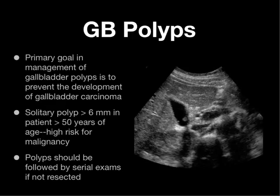Briefly, let me talk about gallbladder polyps. The primary goal in the management of gallbladder polyps is to prevent the development of gallbladder carcinoma. Someone with a solitary polyp greater than 6 millimeters and age greater than 50 years old is high risk for malignancy. If polyps are not going to be removed via cholecystectomy, they need to be followed by serial exam. Polyps are going to be echogenic areas within the lumen — they're not going to be mobile and they should not cast shadowing — but if you see these as incidental findings, refer the patient for follow-up.